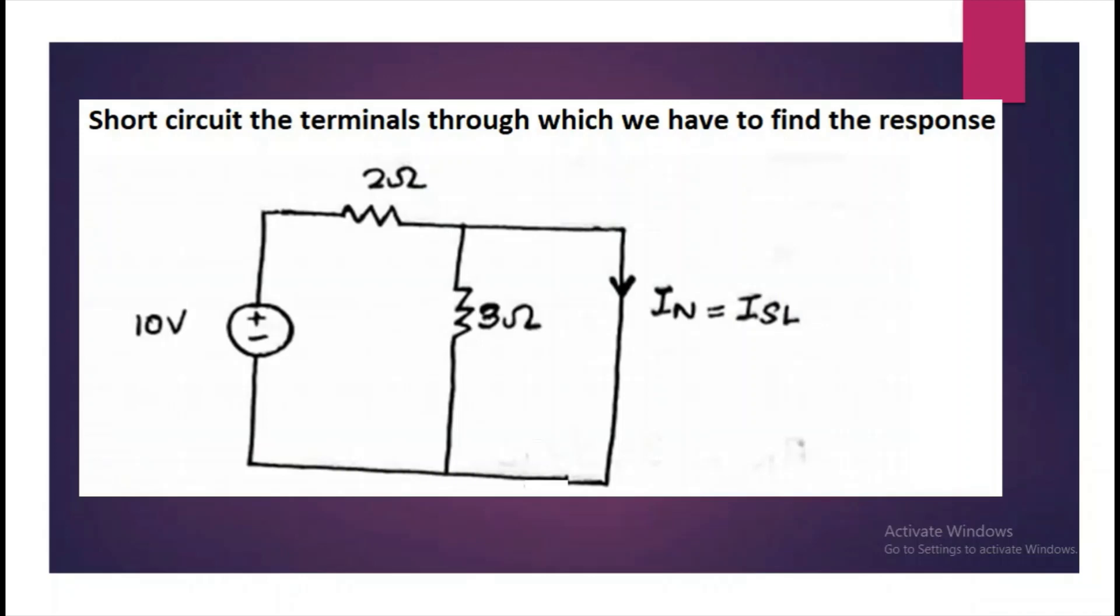So as the first step, in order to find the equivalent Norton circuit, we have to short circuit the element through which we have to find the response. So here we have to short circuit the terminals AB given over here.